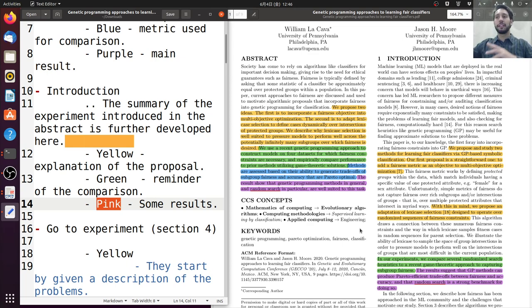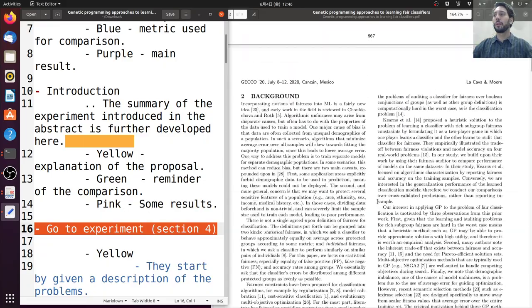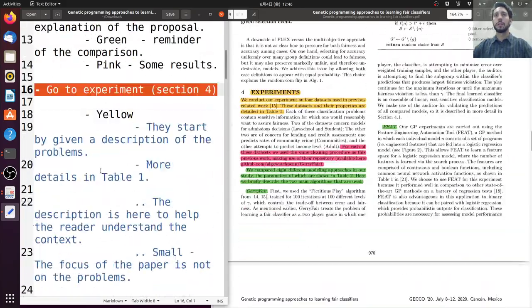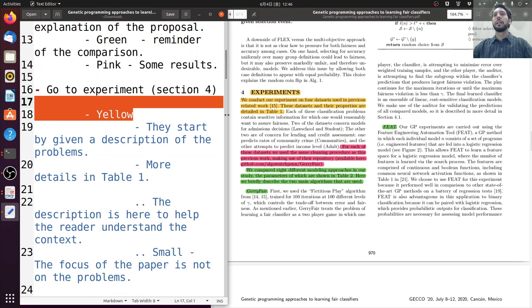So move on to the experiment, the main important part for us. So in yellow here, they start giving a description of the problem. Again, as in the paper before, the problem itself is not what they are interested in. So they give a small explanation.